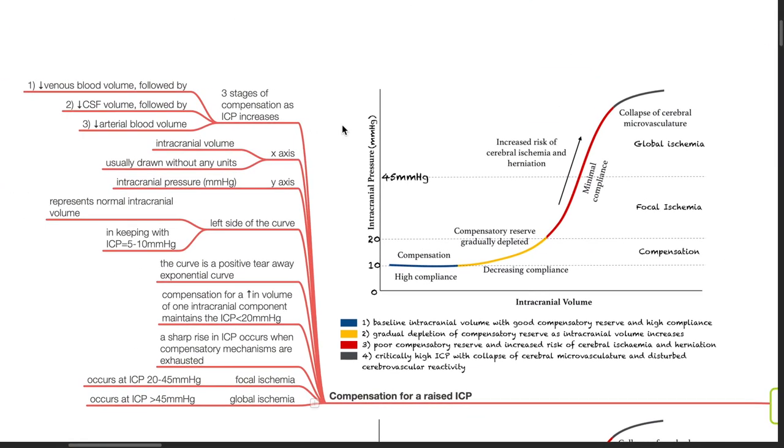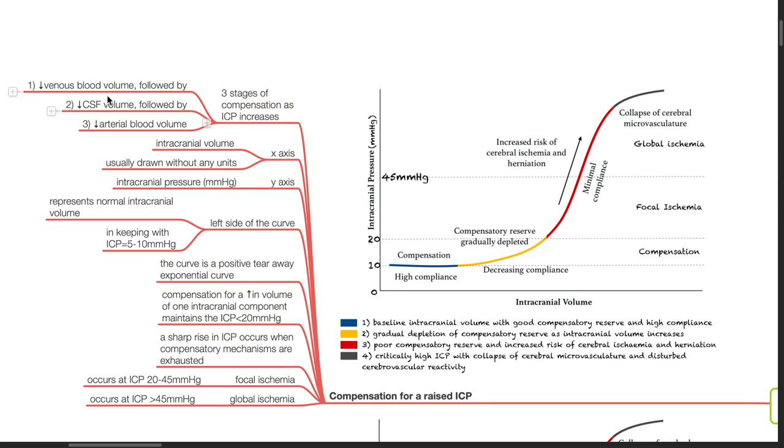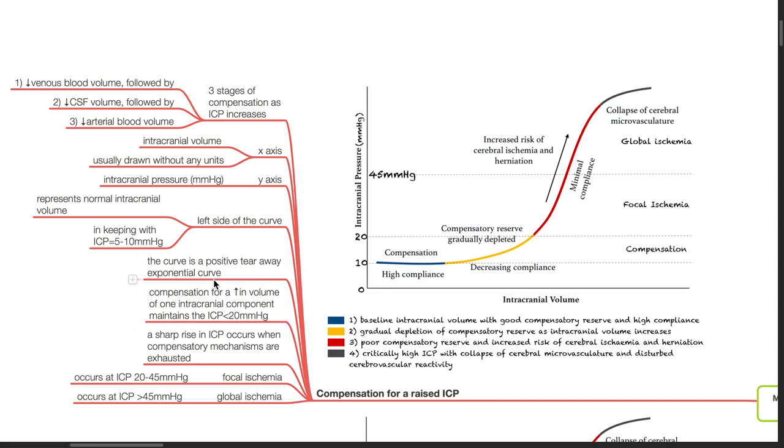Compensation for raised ICP. There are three stages of compensation as ICP increases: decreased venous blood volume, followed by decreased CSF volume, followed by decreased arterial blood volume. The x-axis represents intracranial volume, usually drawn without units. The y-axis represents intracranial pressure in mmHg. At the left side of the curve, this represents normal intracranial volume keeping with 5 to 10 mmHg. The curve is a positive tear-away exponential curve with 4 zones. The first zone in blue represents baseline intracranial volume with good compensatory reserve and high compliance. The second zone in yellow shows gradual depletion of compensatory reserve as intracranial volume increases. The third zone in red shows poor compensatory reserve and increased risk of cerebral ischemia and herniation. The last zone in grey shows critically high ICP with collapse of cerebral microvasculature and disturbed cerebrovascular reactivity.